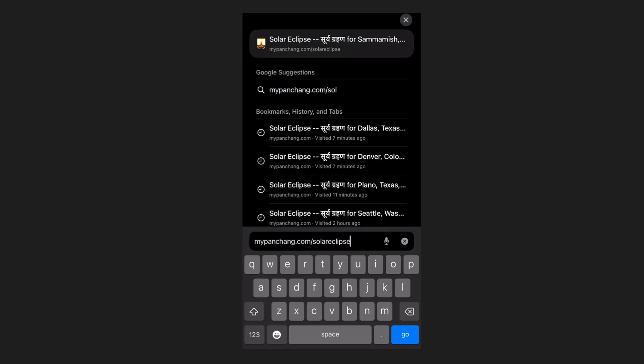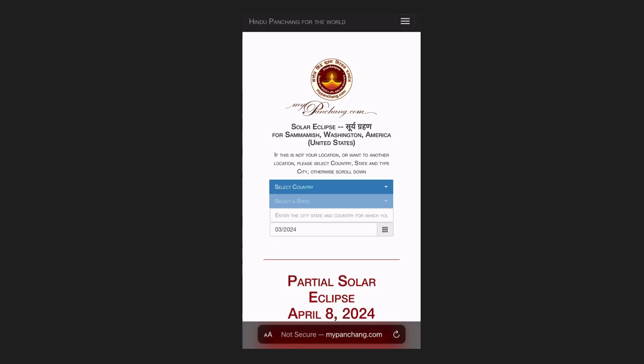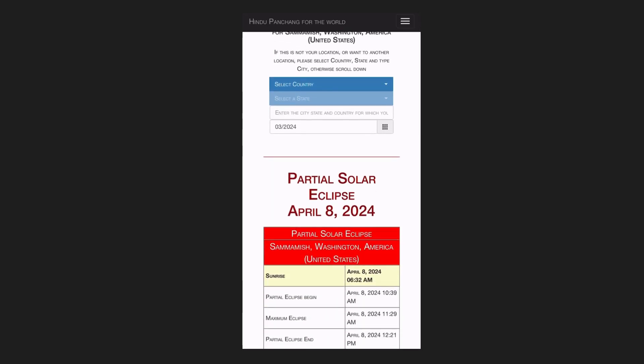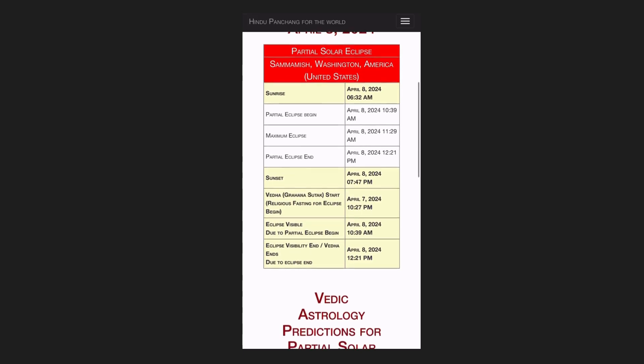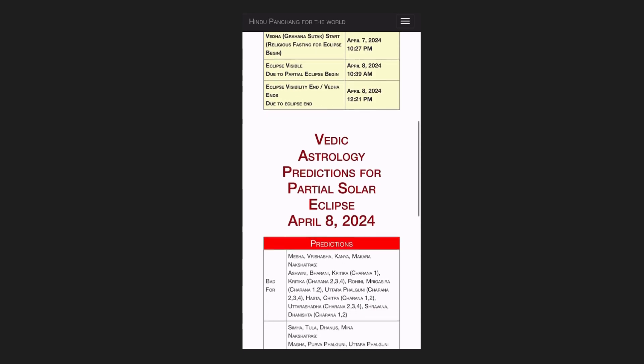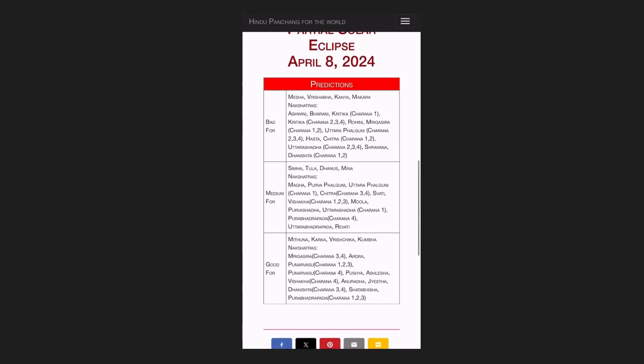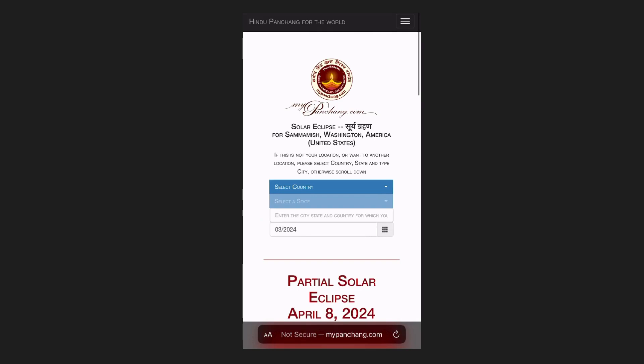So if you want to see if you have a solar eclipse in your town, you can go to mypanchang.com/solareclipse. You visit there and you will see the page right away. It will detect your location. For here it will show Sammamish, Washington, United States. Once you see this page, it will tell you sunrise time, what time eclipse begins, what is the maximum eclipse, what time partial eclipse ends, sunset time, the time you have to observe sutaka, grahana sutaka, eclipse visibility and ending time, and also predictions for good and bad.